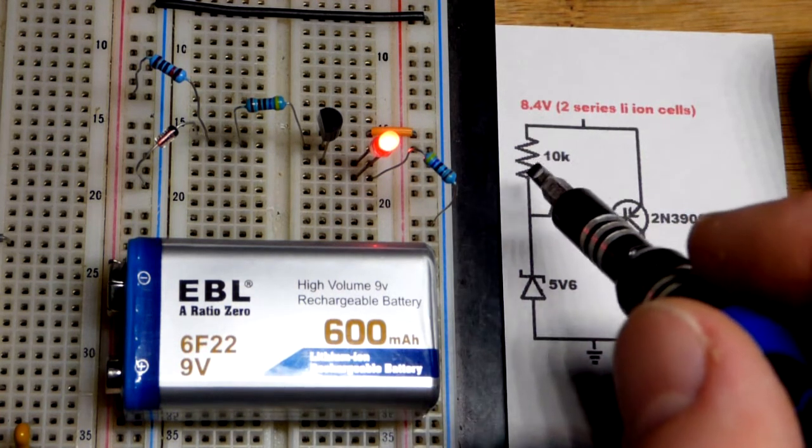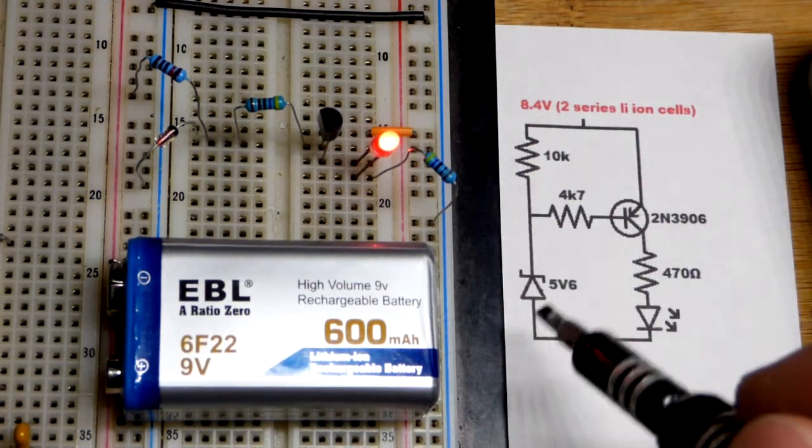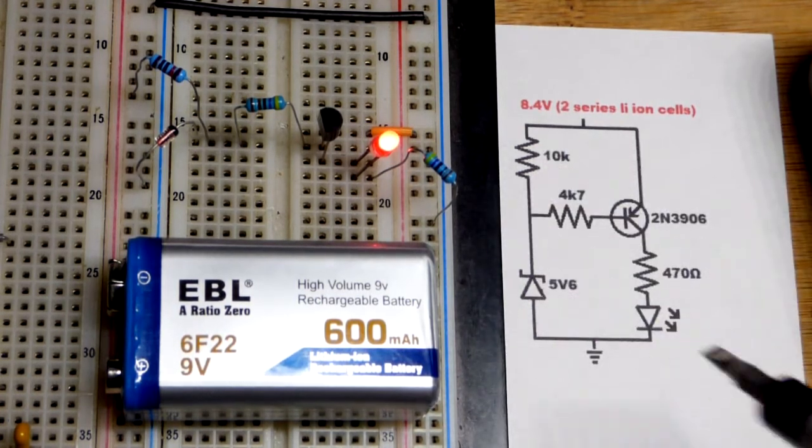And so we have this 10 kilo ohm resistor to give a different path for current to flow. So at low enough voltages, that will cut off any current flow that direction. It would all flow that way.